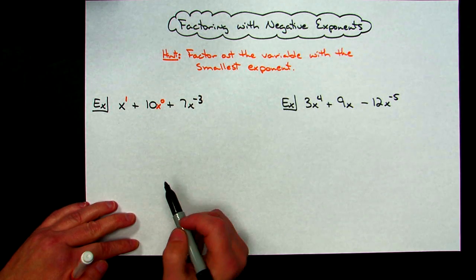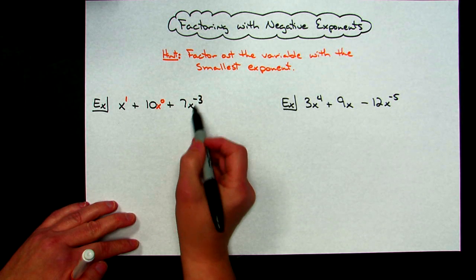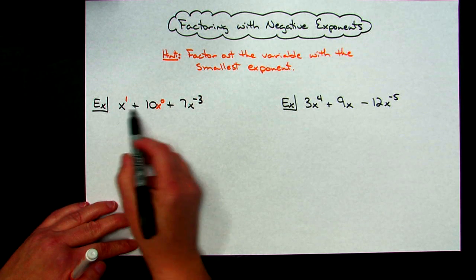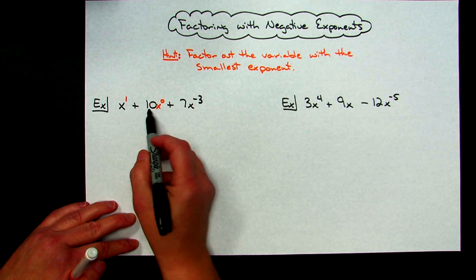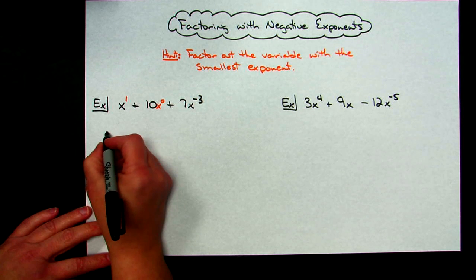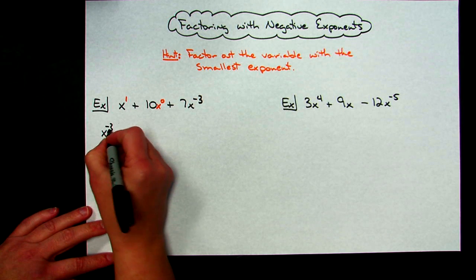I'm looking at a 1 and a 0 and a -3. So I know I'm going to take out x^(-3) because that's my smallest exponent. I'll take a look at those coefficients: 1 and 10 and 7. I do not have a greatest common factor in the coefficients, so the only thing that's going to be factored out is x^(-3).